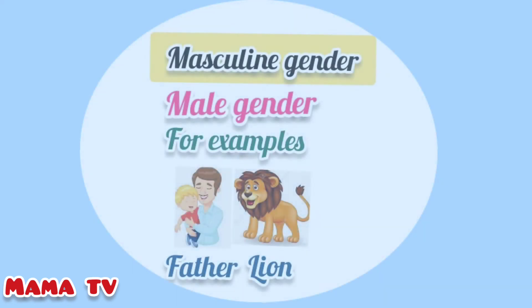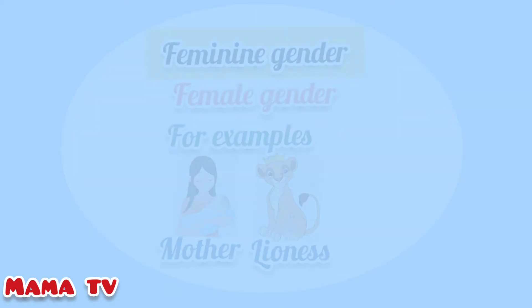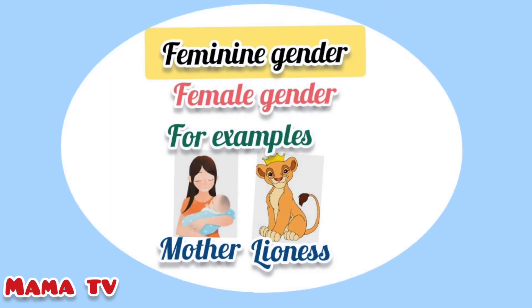Neuter gender. Masculine gender means male gender. For example, a human being: father. And an animal: lion. These are examples of masculine gender.